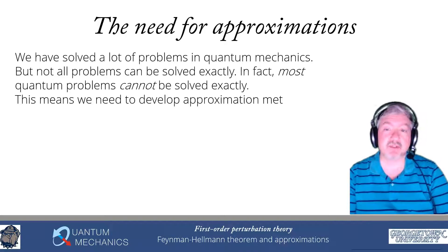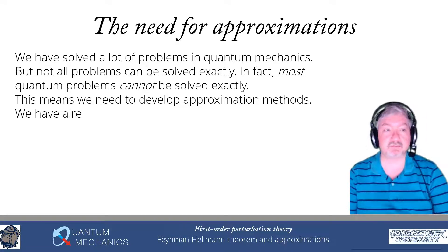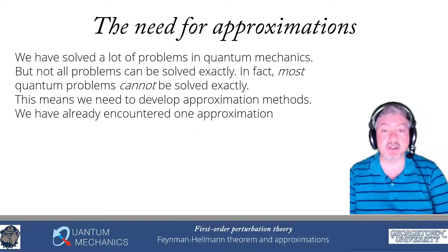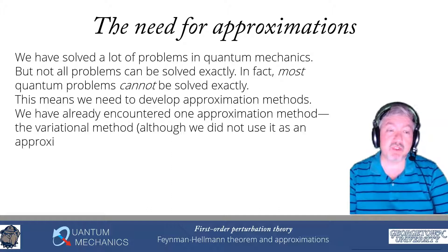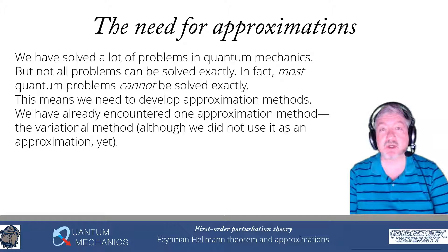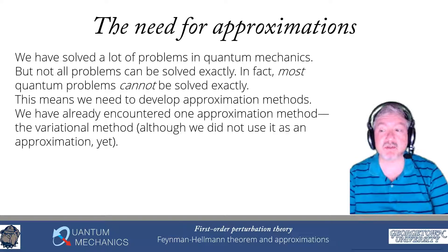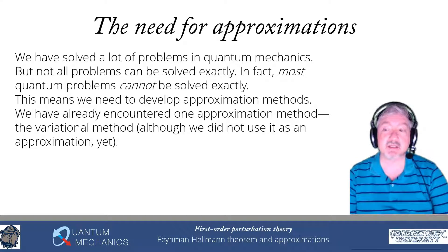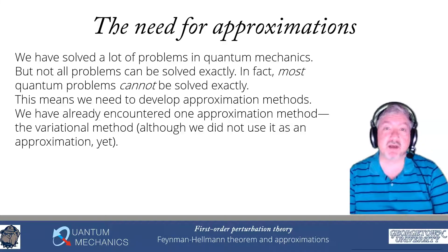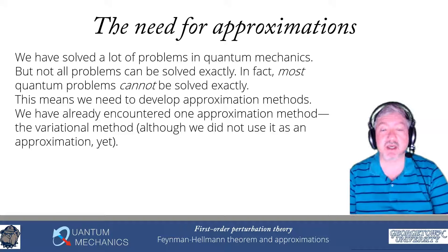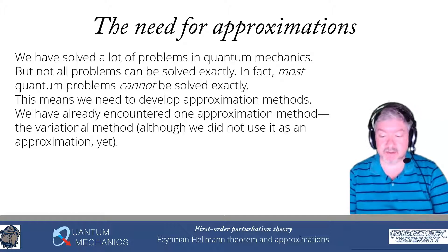We want to develop different kinds of approximation methods. There is one approximation method we've already encountered — the variational method. The way you would use it as an approximation is to create a variational wave function that depends on some parameters, calculate the expectation value of the energy, and then minimize that expectation value by finding the parameter values that give the lowest possible energy. Then you have a good approximation for the ground state of the system.